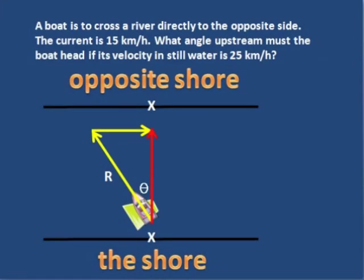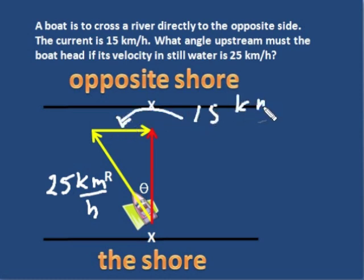So let's review and also get the answer. We head into the stream at 25 kilometers per hour, the same velocity we are capable of in still water. That's what this boat can do. And the stream carries us down at 15 kilometers per hour.